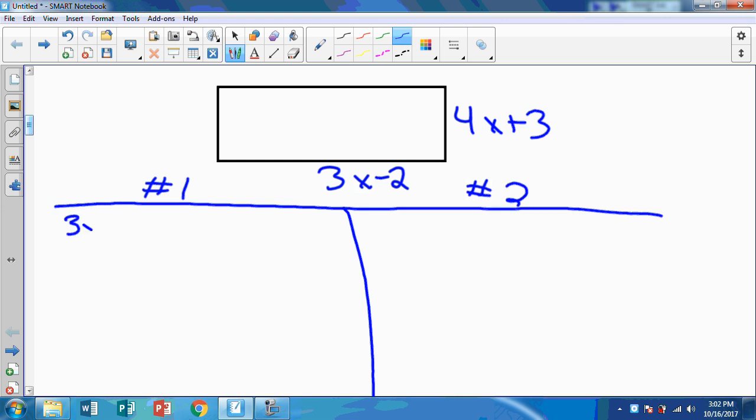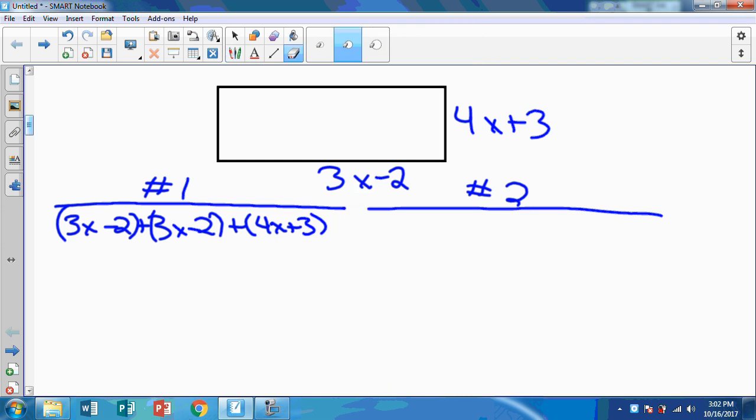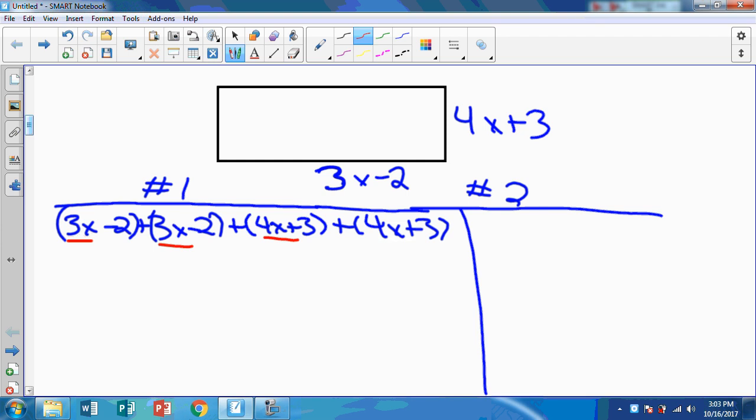So first of all, you could take 3x minus 2, plus 3x minus 2, plus 4x plus 3, plus 4x plus 3. Okay, and when I do that, I can find the like terms: 3x, 3x, 4x, 4x. So let's see, 3 plus 3 is 6, 6 plus 4 is 10, 10 plus 4 is 14. So that's 14x. And then I can do these. So a negative 2 plus negative 2 is negative 4. Negative 4 plus 3 is negative 1. Negative 1 plus 3 is 2. So 14x plus 2. That's one way you could do it.